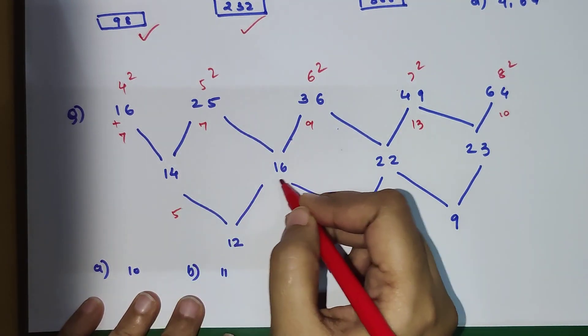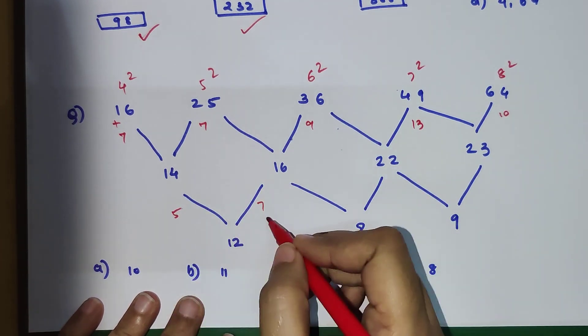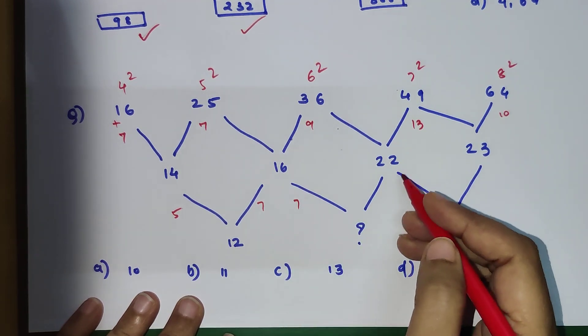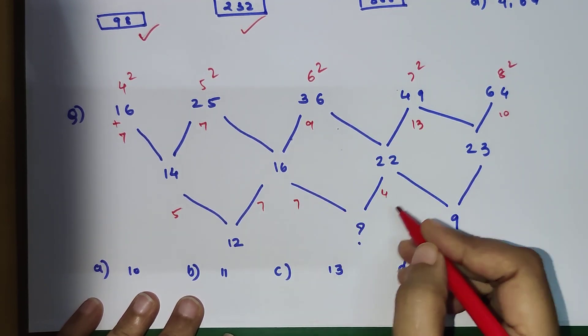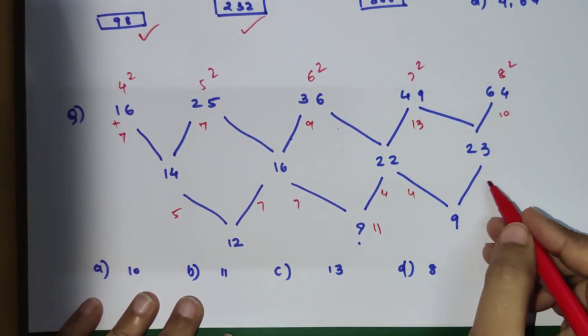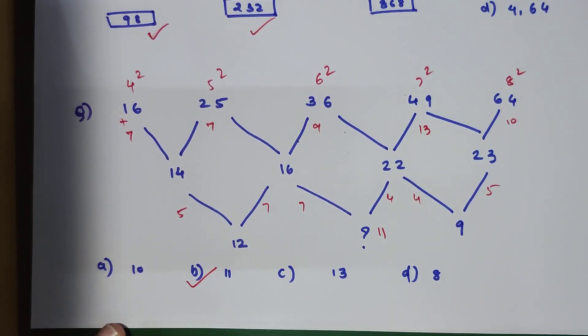Using the same logic, let's see whether it's getting followed in the next layer as well. 1 plus 4 is 5, 1 plus 6 is 7, so 7 plus 5 is 12. So this is 7, and then 2 plus 2 is 4, so this should be coming out to be 11. And 4 plus 5 gets you 9. So yes, my option B is the correct option.